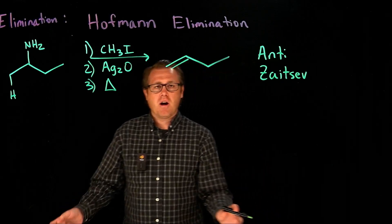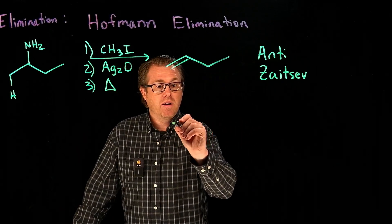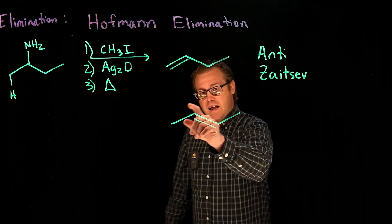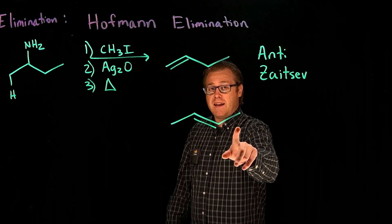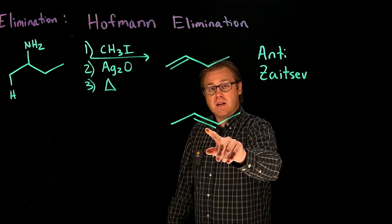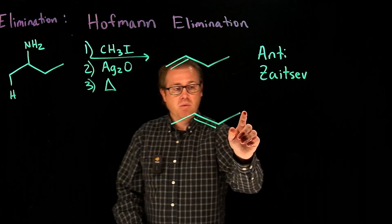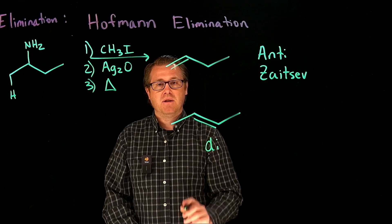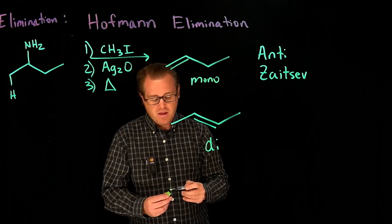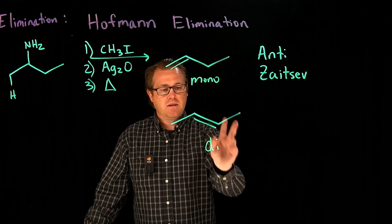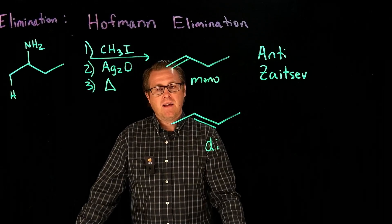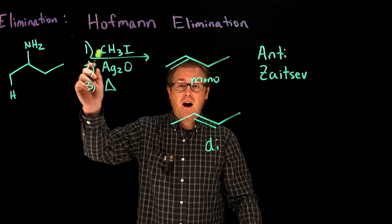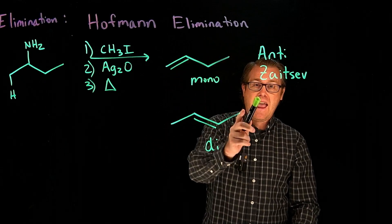The Zaitsev product would have given a product like this, because this alkene is more thermodynamically favorable with a more stable double bond having more alkyl groups attached. This alkene is disubstituted and this one is monosubstituted. A disubstituted alkene is more stable than monosubstituted. But when you do a Hoffman elimination, you get the anti-Zaitsev product.